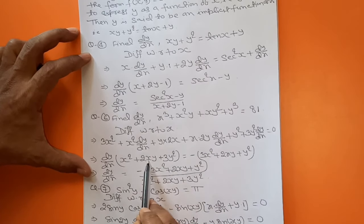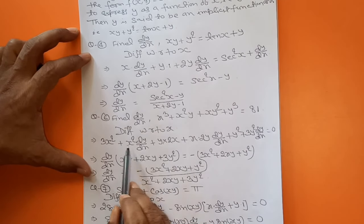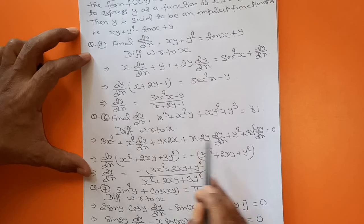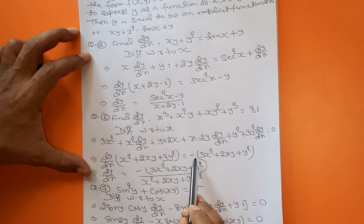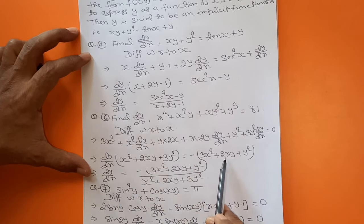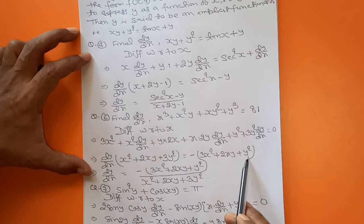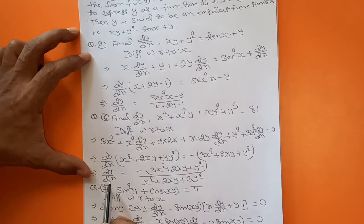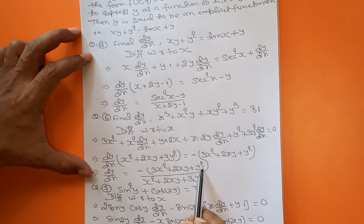Now take dy/dx common: dy/dx · (x² + 2xy + 3y²) = −(3x² + 2xy + y²). Therefore, dy/dx = −(3x² + 2xy + y²) / (x² + 2xy + 3y²).